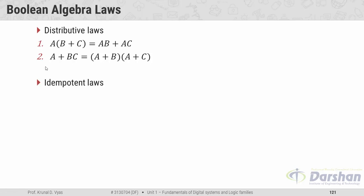The next is the idempotent law: A AND A equals A, and A OR A equals A. We have already seen these two in the AND and OR laws, but these specific laws are known as idempotent laws.